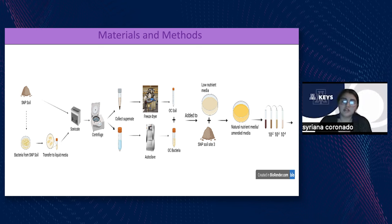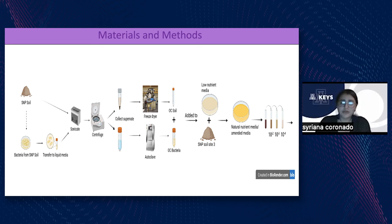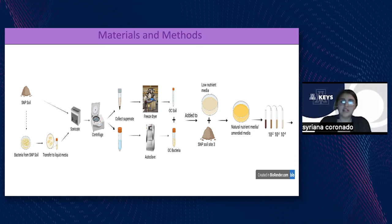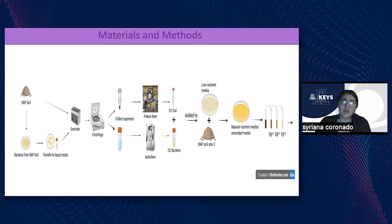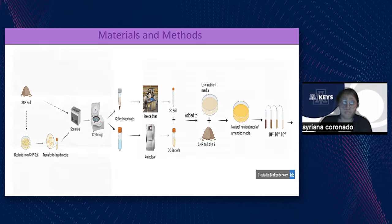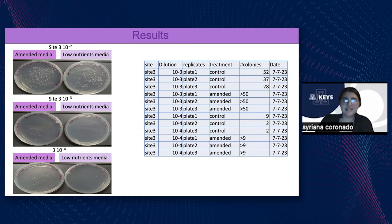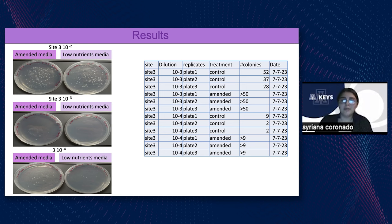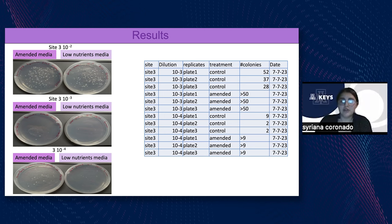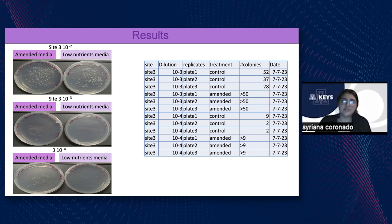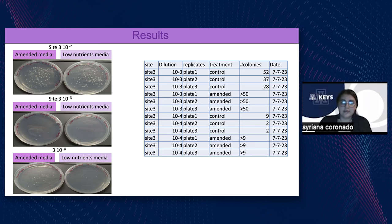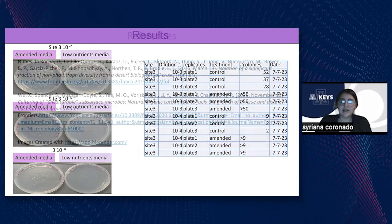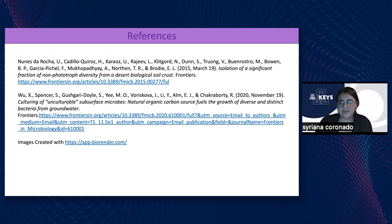We processed soil and bacteria from Saguaro National Park to create an organic carbon soil and organic carbon bacteria, which we added into a media to make an amended media so we could culture these slower-growing bacteria. Our amended media yielded more colonies and more diversity compared to our low-nutrients control media. The Tifili lab will now focus on studying these slower-growing microbes that grew in the amended media, identifying them and doing more tests on them. Thank you.